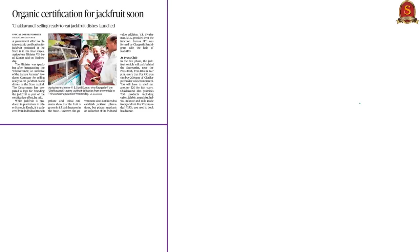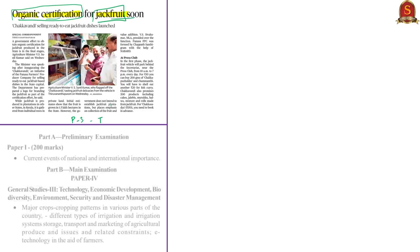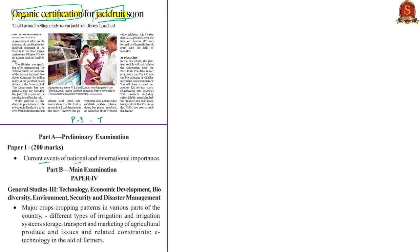The fourth news article is titled 'Organic Certification for Jackfruit Soon.' This news speaks about the Kerala government's efforts to obtain organic certification for jackfruit produced in that state. We shall discuss the organic certification program that currently exists in India and also see in brief about jackfruit. This article appears on page number 3 in the Thiruvananthapuram edition only. The analysis is helpful in your prelims preparation under current events of national and international importance, and also in your mains preparation in General Studies Paper 3 under major crops, cropping patterns, transport and marketing of agricultural produce.